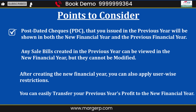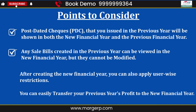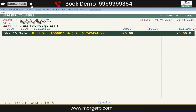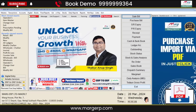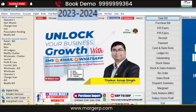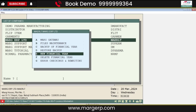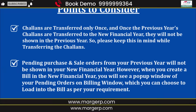Additionally, post-dated checks (PDC) issued in the previous year will be shown in both the new financial year and the previous financial year. Any sale bill created in the previous year can be viewed in the new financial year, but cannot be modified. After creating the new financial year, you can also apply user-wise restrictions and easily transfer your previous year's profit to the new financial year. These are some Chalans, PDCs, Sales Bills, and Pending Orders created in the previous year, from 2023 to 2024, and this is our profit.